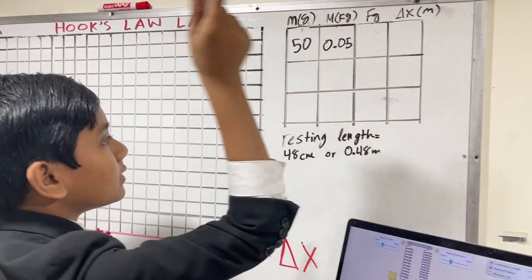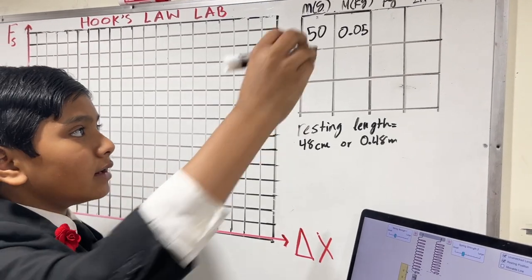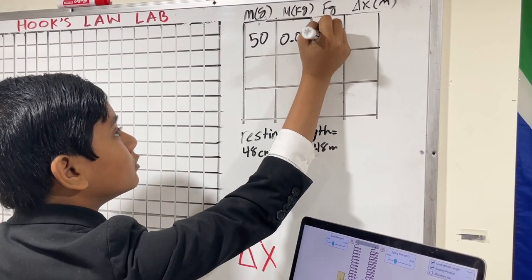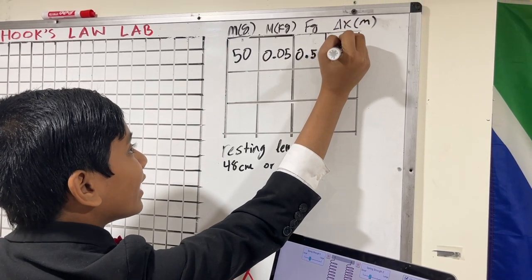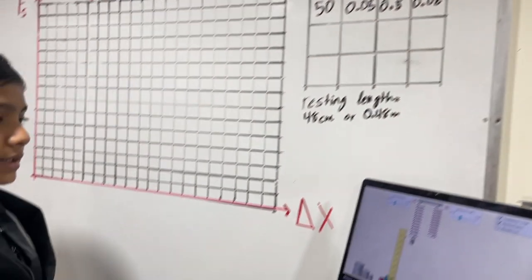In this case, the new resting position is this green line, which falls at approximately 8 centimeters from the beginning of the ruler. So that means that our mass in grams here is 50. Our mass in kilograms would be dividing by 1,000, and thus 0.05.